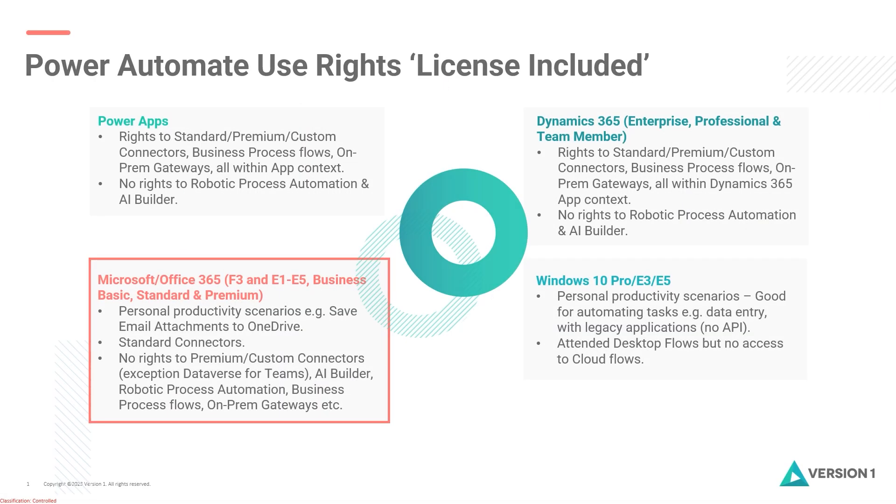The next two seeded scenarios are from a personal productivity point of view. With Microsoft 365 or Office 365 licenses, you're able to use a limited amount of Power Automate in a personal productivity scenario — a common example being automating the saving of email attachments to your OneDrive. In that context, you only have access to the standard Microsoft connectors; there are no rights to premium or custom connectors, apart from maybe Dataverse for Teams. AI Builder, robotic process automation, business process flows, and on-premises gateways are all excluded.